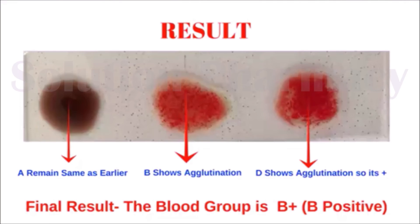When we add a drop of anti-D antisera solution to the blood sample, if the RBCs contain the corresponding D antigen, an agglutination reaction occurs between the anti-D agglutinin and the agglutinogen on the RBC — indicating a positive reaction, meaning the D antigen is present and the blood is Rh positive. If there is no agglutination reaction, it indicates a negative reaction — the D antigen is absent and the blood is Rh negative.